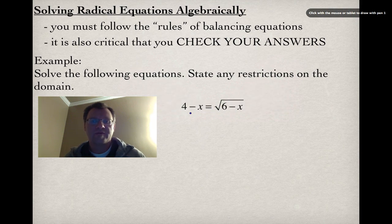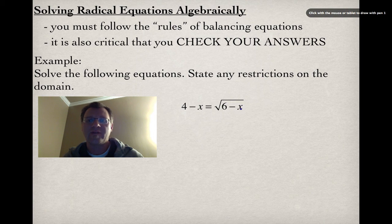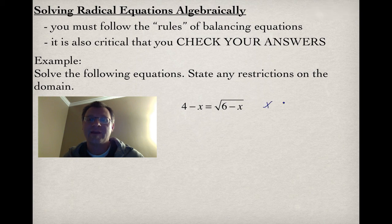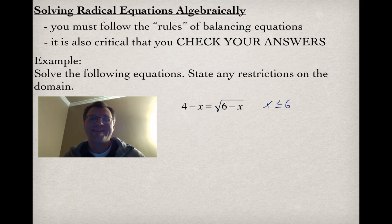Our second equation is 4 − x = √(6 − x). We need to state any restrictions on the domain. If I plug in 6 for x I get 0 under the root, which is okay. If I plug in 7 I get negative 1 under the root, which is not okay. So x must be less than or equal to 6. When solving these equations we need to isolate the root sign — both equations so far already have that, so we can go ahead and square both sides.